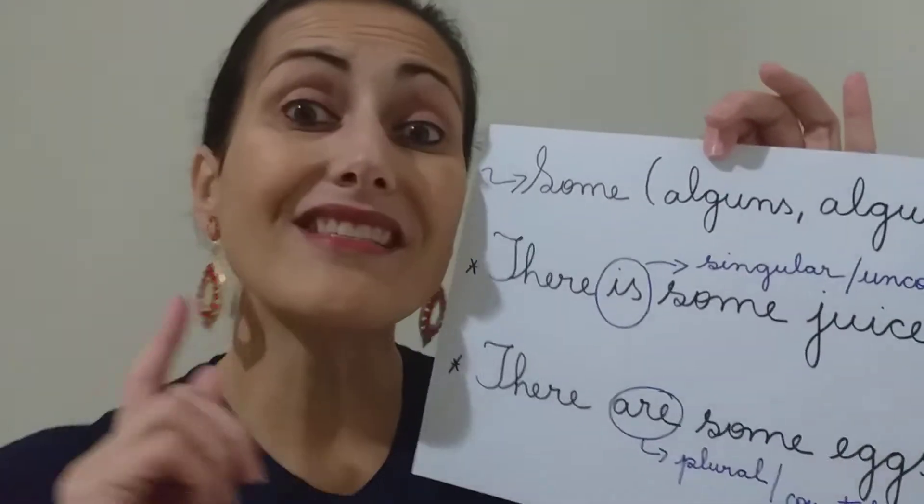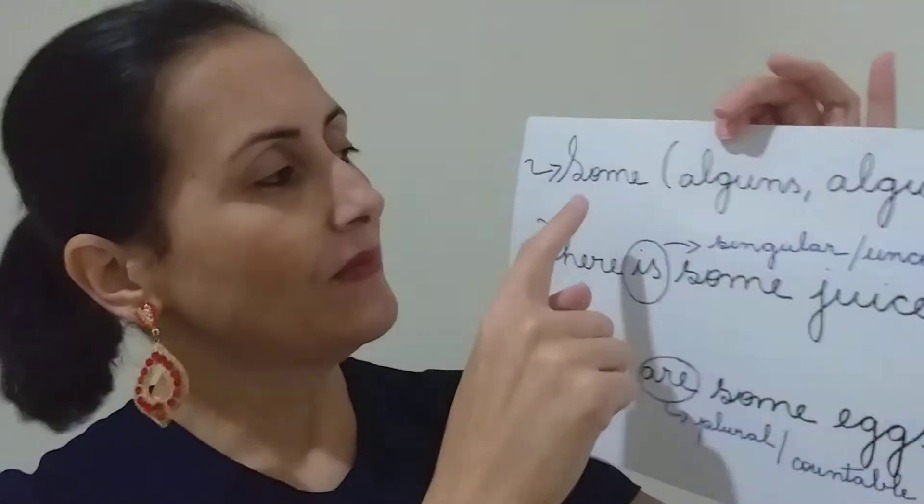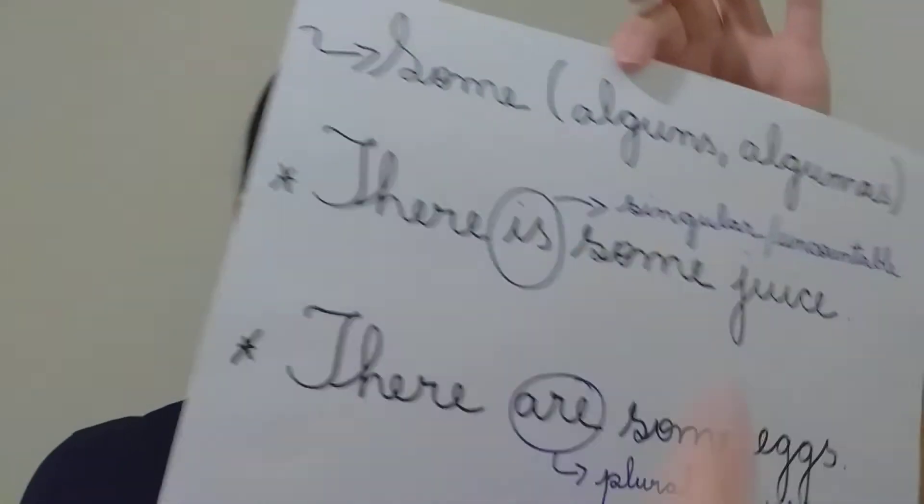There is some juice. There are some eggs. Pay attention guys. When you use 'some' — it's an article, 'some'.